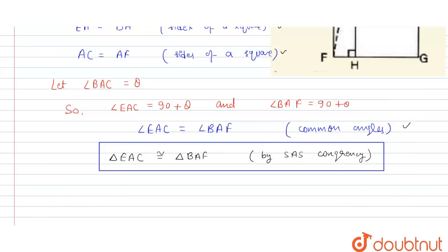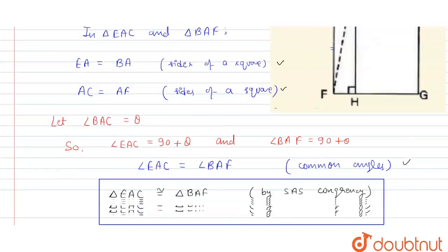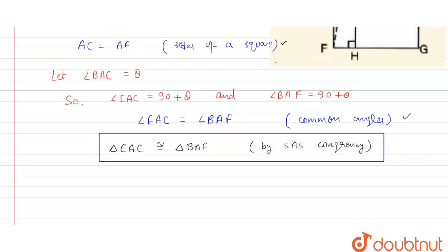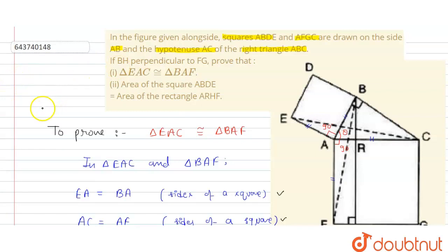The second part of the problem requires us to show that the area of square ABDE equals the area of rectangle ARHF. This was the first part, and now we proceed to prove the second part.